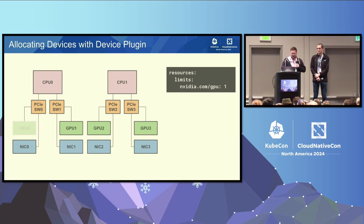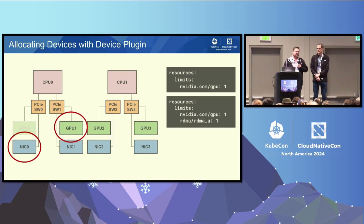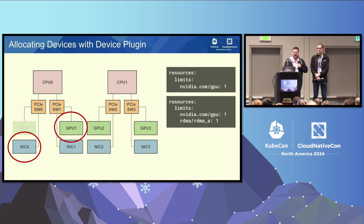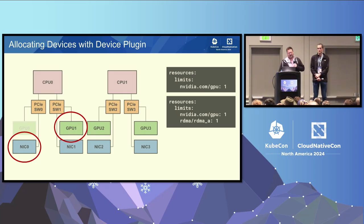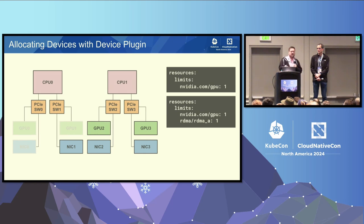Now a second request comes in that wants both a GPU and an RDMA NIC. The scheduler sees the node has three GPUs and four NICs available and sends the pod there. The plugins on the node are two separate plugins — one for GPU and one for RDMA — and they each independently pick the first available option. That's NIC zero and GPU one. But those two are not on the same PCIe switch, so we can't use GPU Direct between those two devices because they're sitting on two different PCI roots.